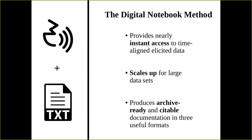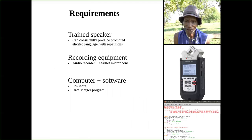In order to do these things, there are some requirements. First, you have to be working with a trained speaker who can consistently produce prompted elicited language, ideally with repetitions. You also need some basic recording equipment like an audio recorder and a headset microphone. You also need a computer and some basic software like IPA input software if you're doing IPA transcriptions, and a data merger program, which is available on the Digital Notebook Method wiki.